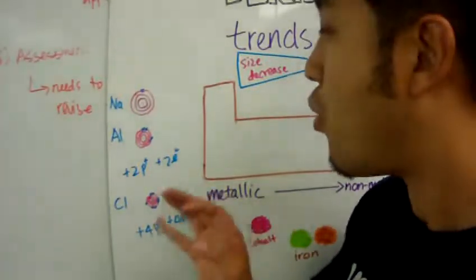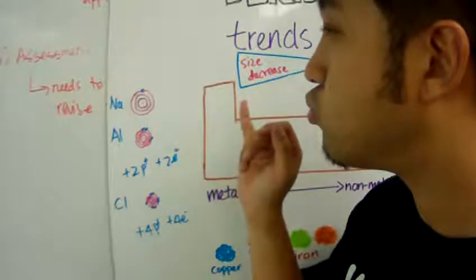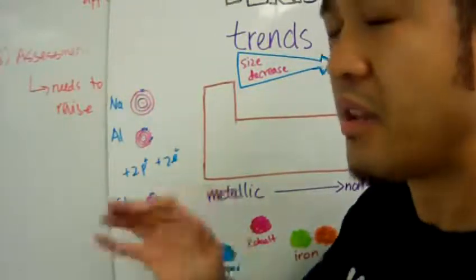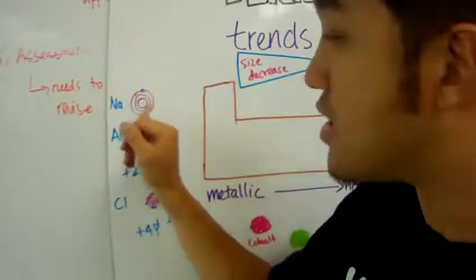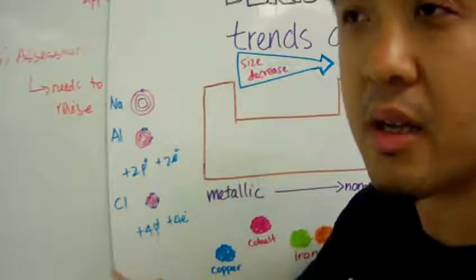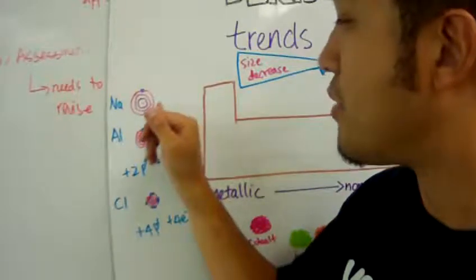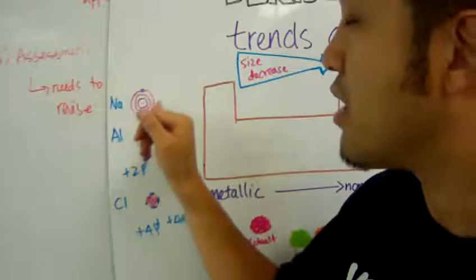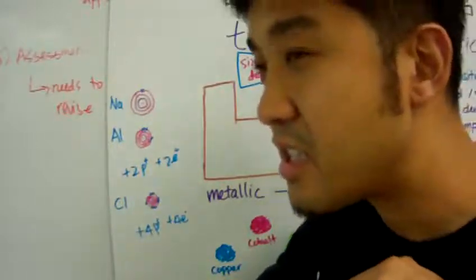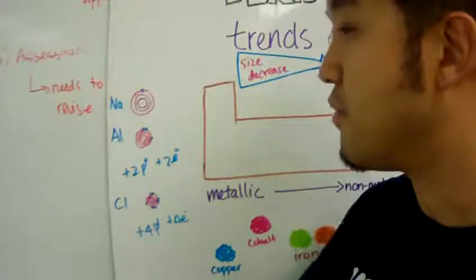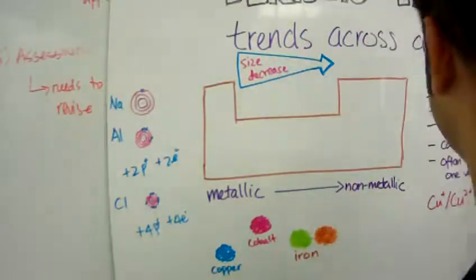Now, you might ask me, well, Mr. Koh, what about the inside electrons? Aren't they playing a role? Yes, they are. So now, the amount of electrons in the inside shells of sodium, aluminum, and chlorine remain the same. So that means across the same period, the forces that inhibit the attraction between the valence electrons to the nucleus is the same. It's the same. So this inhibition is called shielding, which we're not going to talk about.